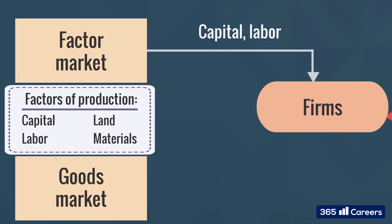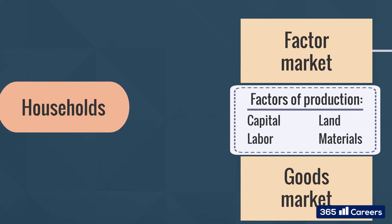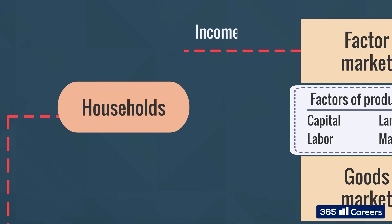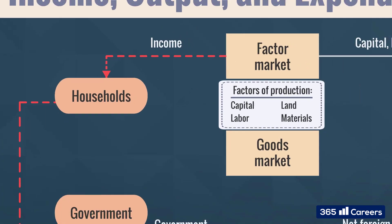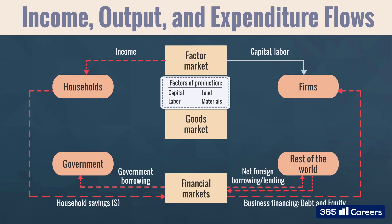As a result of firms' operations, income is generated and part of it flows back from businesses to individuals, or back to households, in the form of salaries paid. We will connect all the dots further down the line.